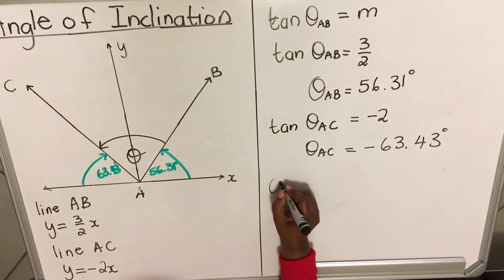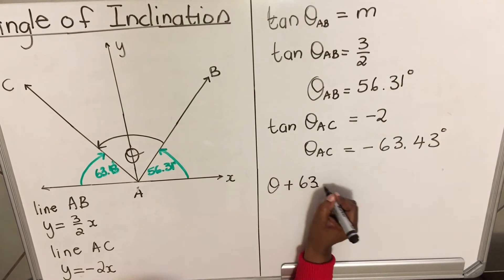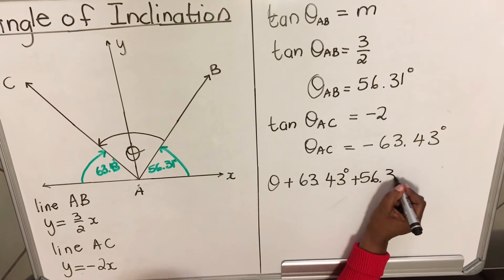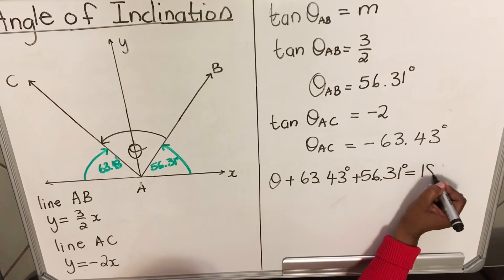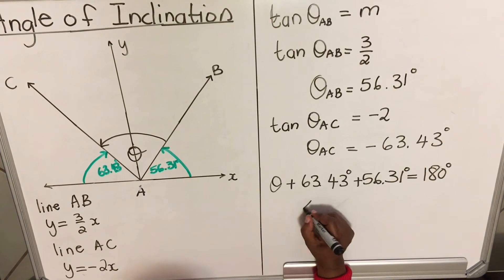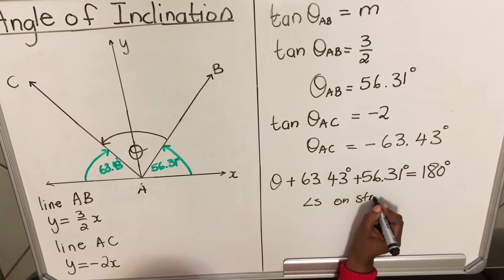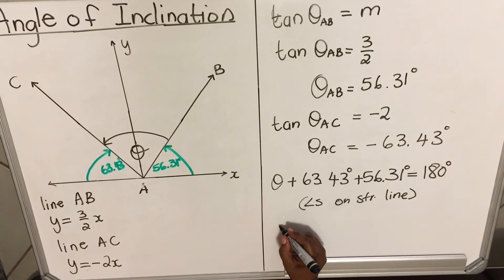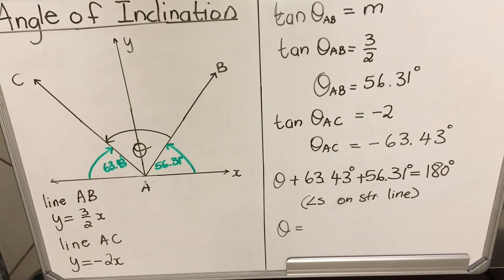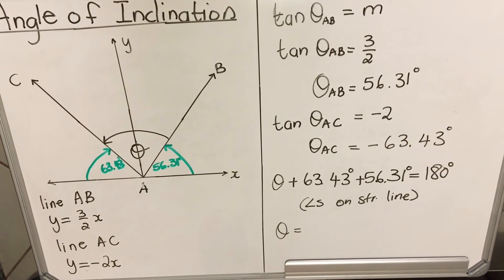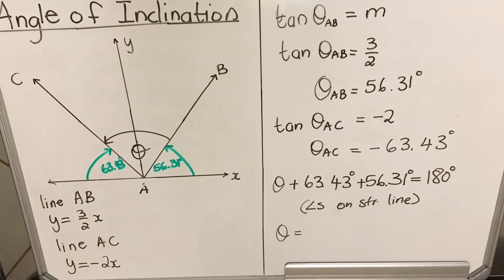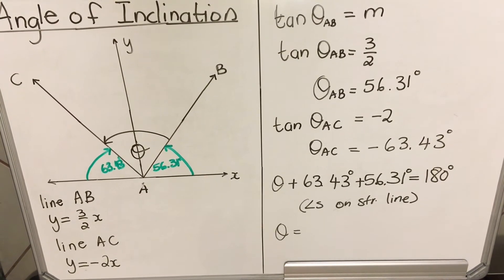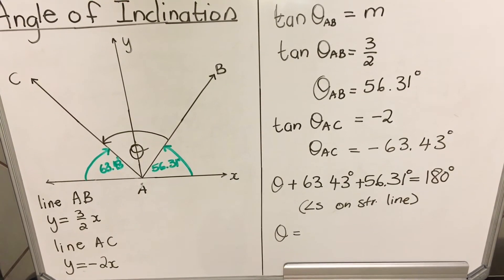Now, how do we get the angle theta between the two lines? These angles are on a straight line, so: theta + 63.43° + 56.31° = 180°, because angles on a straight line add up to 180°.